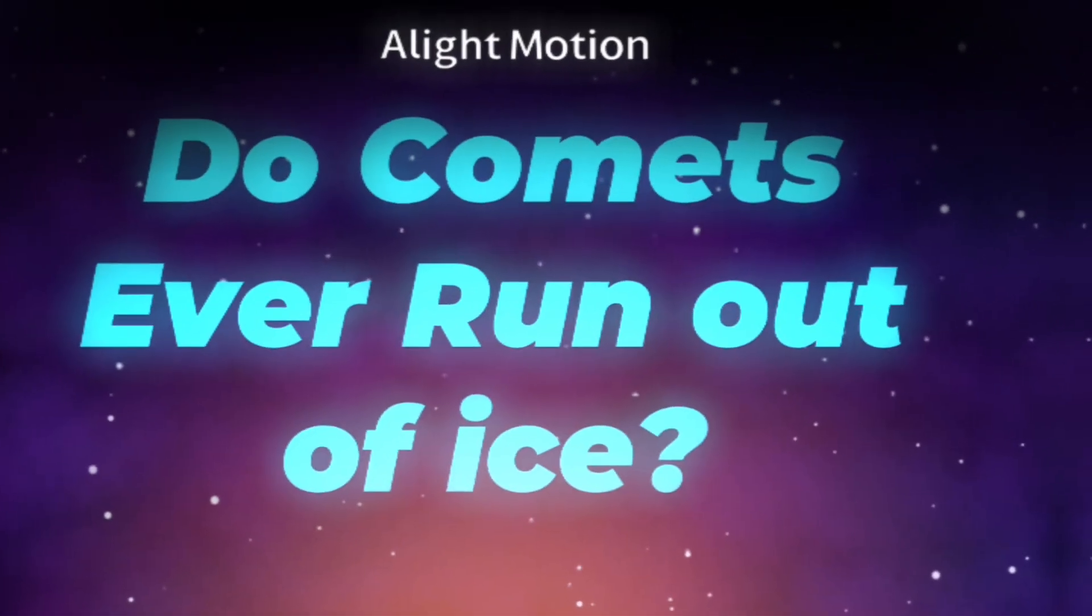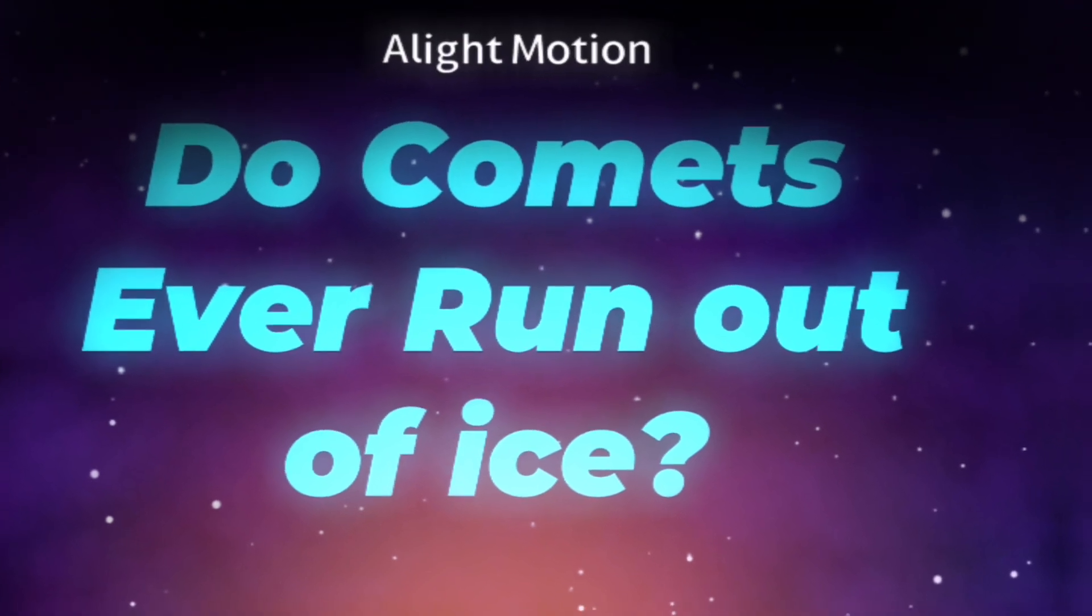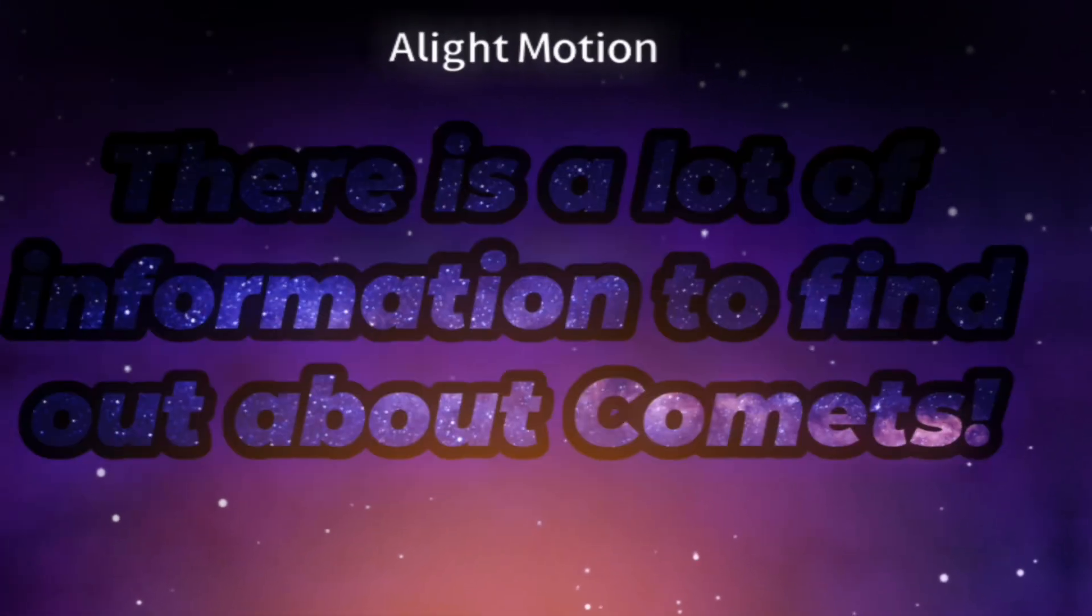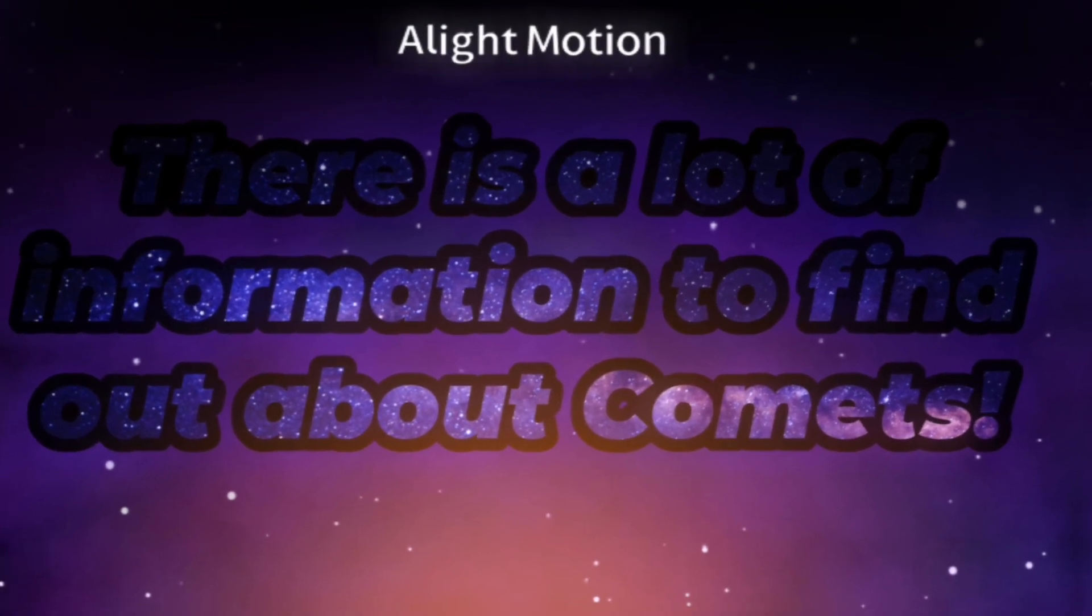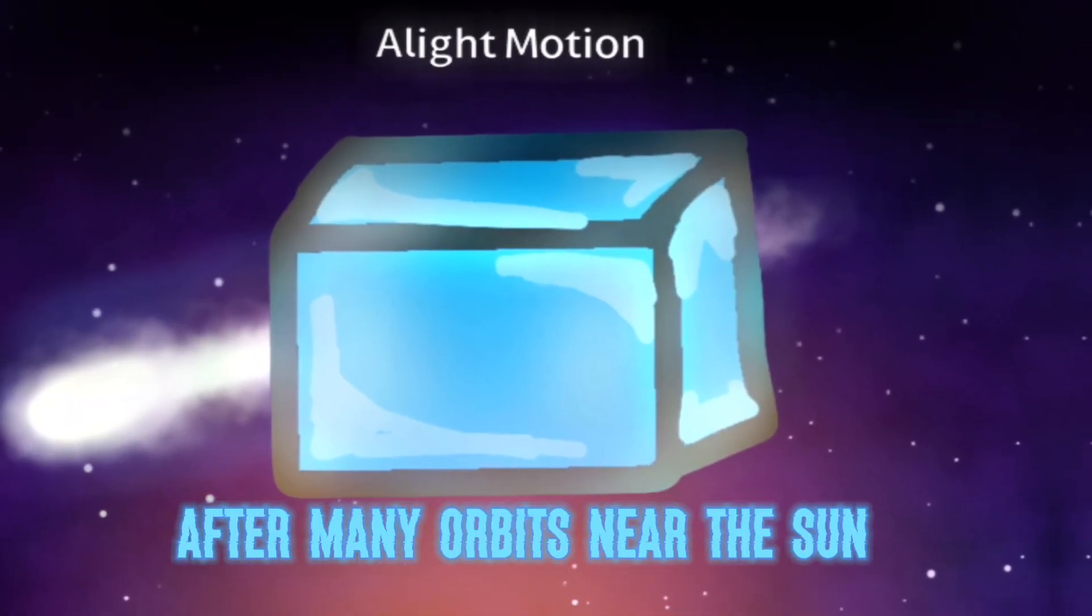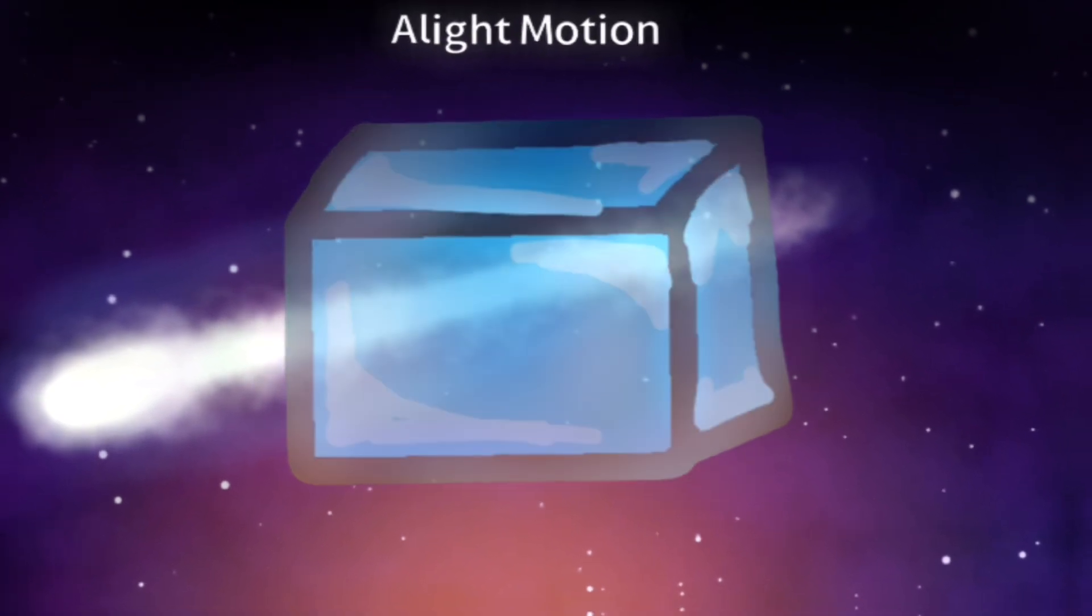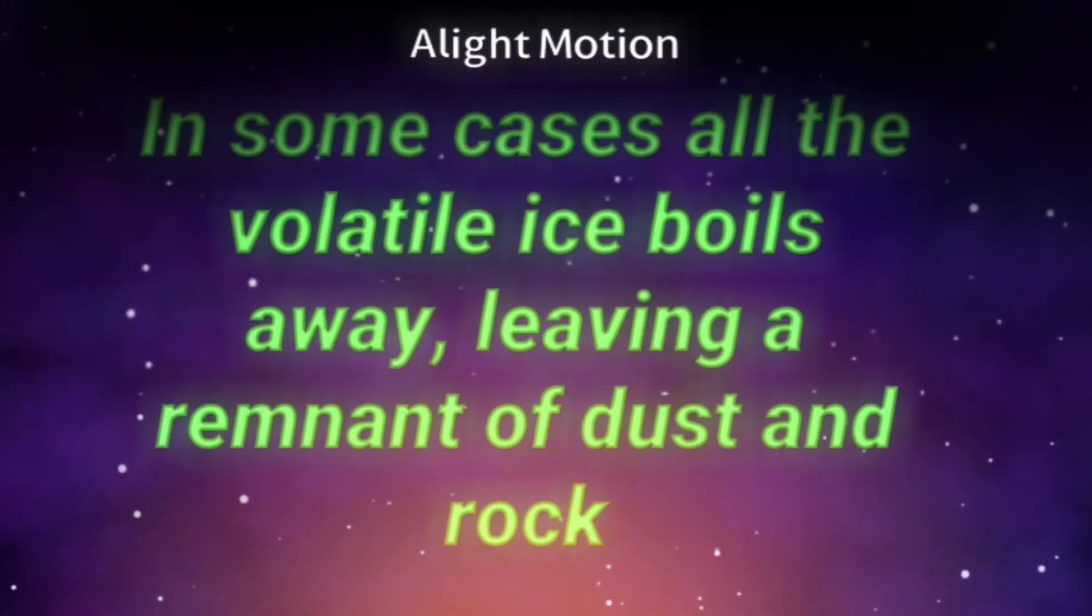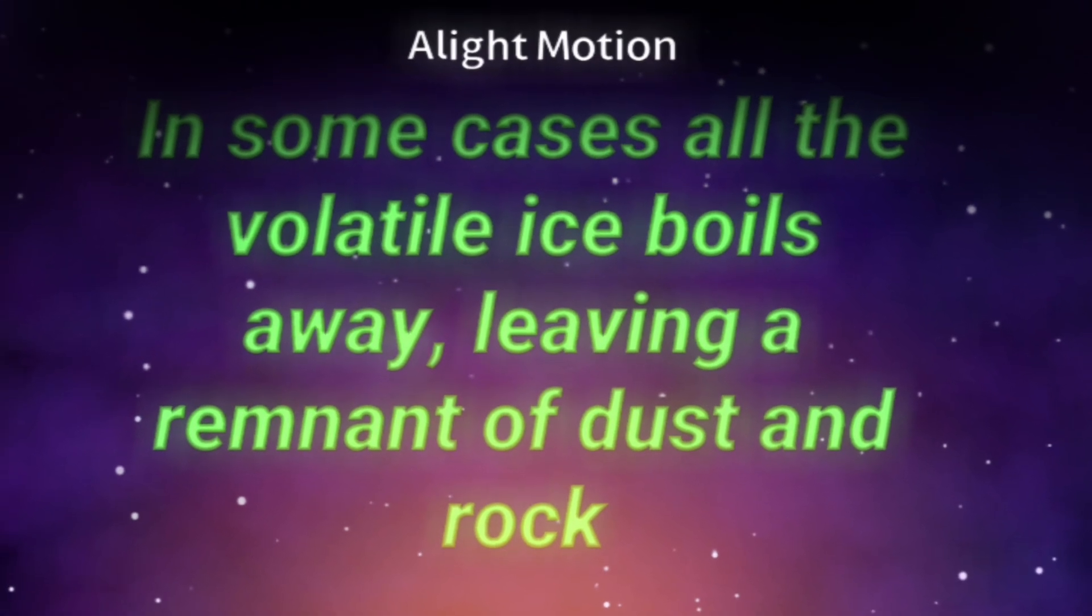I would ask if the comets we see run out of ice, but you didn't have enough explaining. Or you want more? Haha, I'll tell you. A comet does eventually expend its ice. In some cases, all the volatile ice just boils away, leaving a remnant of dust and rock.